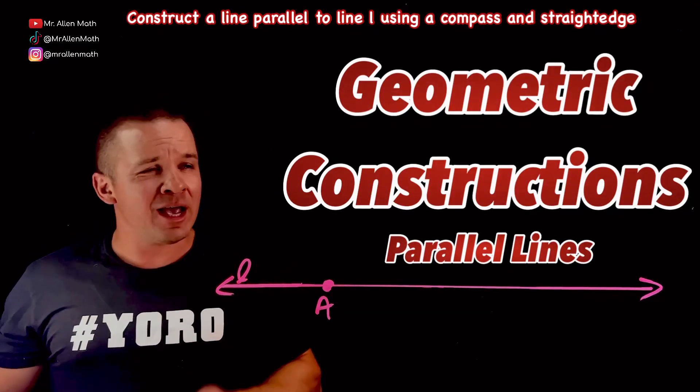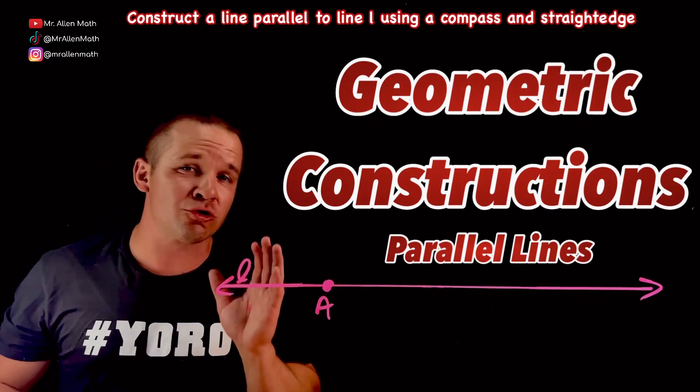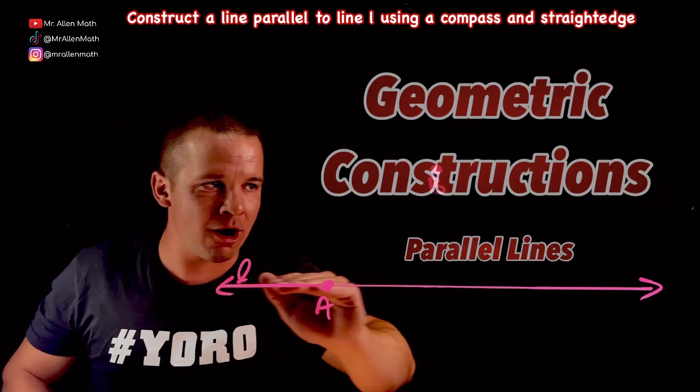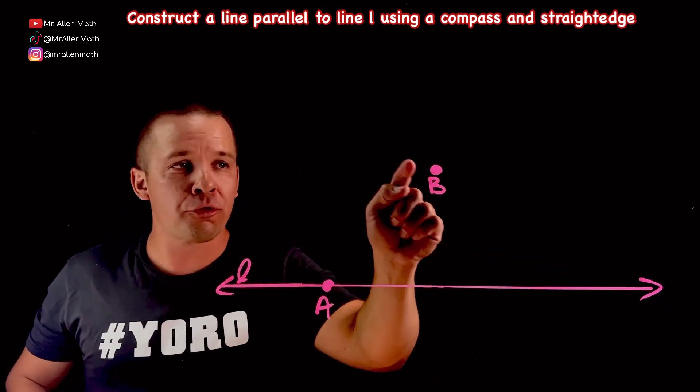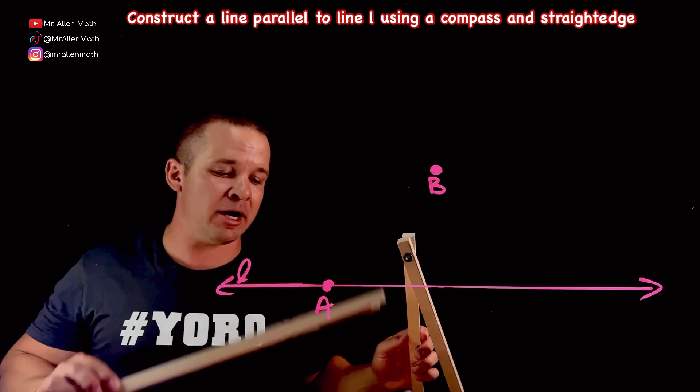What's going on, you guys? Mr. Allen here. In this Dope Math video, we're going to construct a line that is parallel to line L here through point B using our compass and a straight edge.